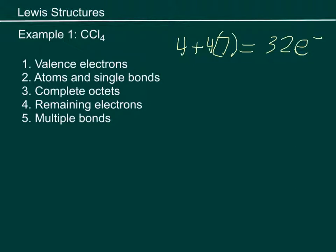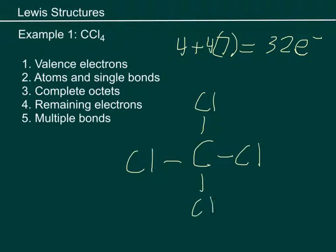So that's our valence right there — 32 valence electrons. Now I'm going to place the atoms and put the single bonds in place. I'm going to take a carbon, put it in the central position, and place chlorine, chlorine, chlorine, chlorine around it. So I have all my atoms accounted for, and I've drawn a single bond between them all.